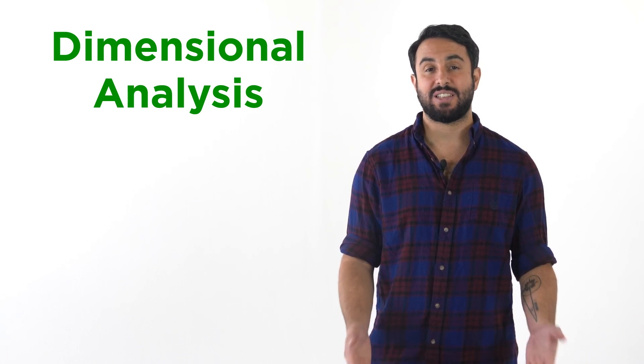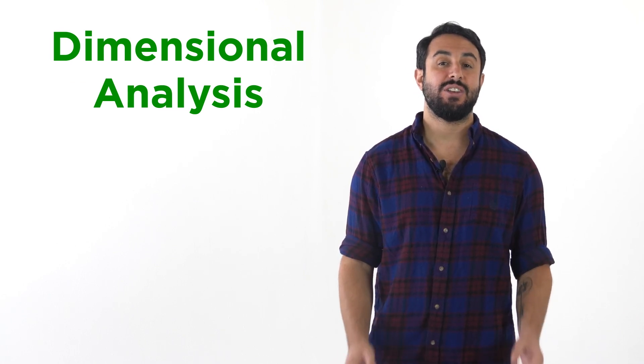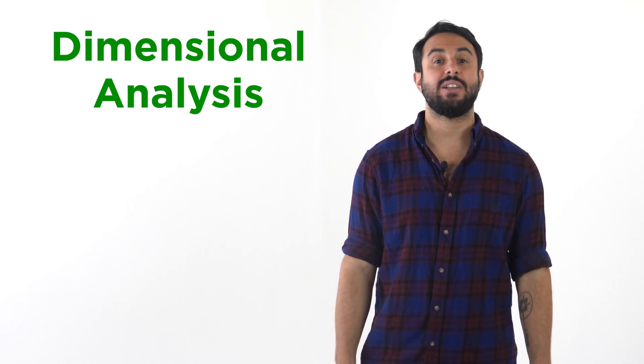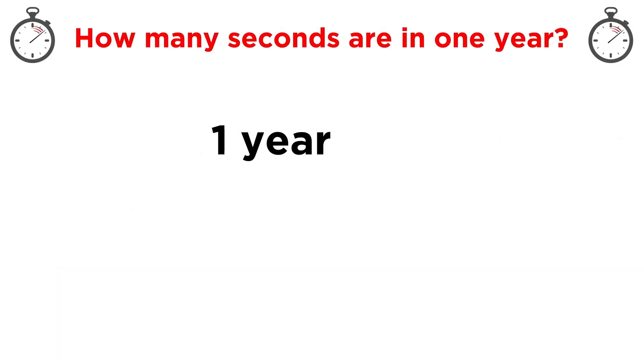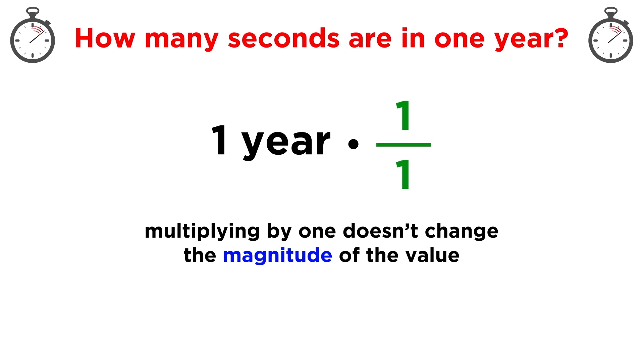To convert one year into seconds, we will use something called dimensional analysis, so let's learn how to do this now. When we perform dimensional analysis, we take some value, the value that we wish to convert, and we multiply it by one or more fractions that are equal to one. These fractions must be equal to one because we don't want to change the magnitude of the value, we only want to change how it is expressed.